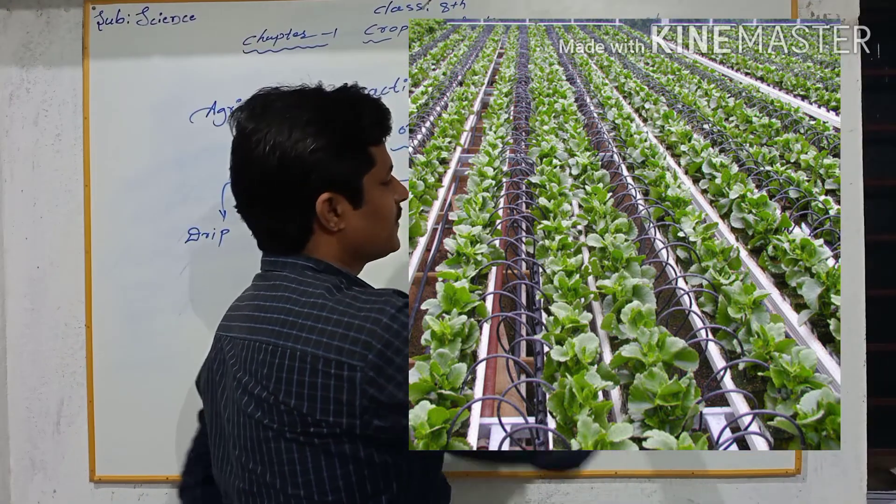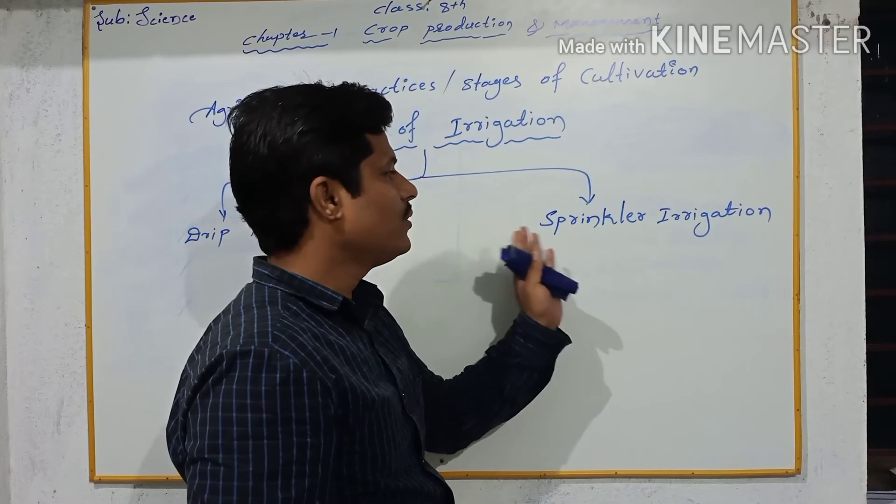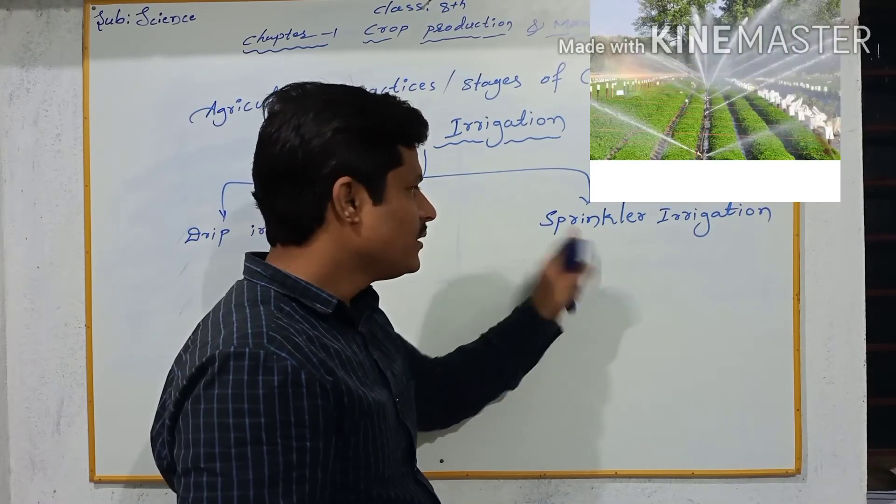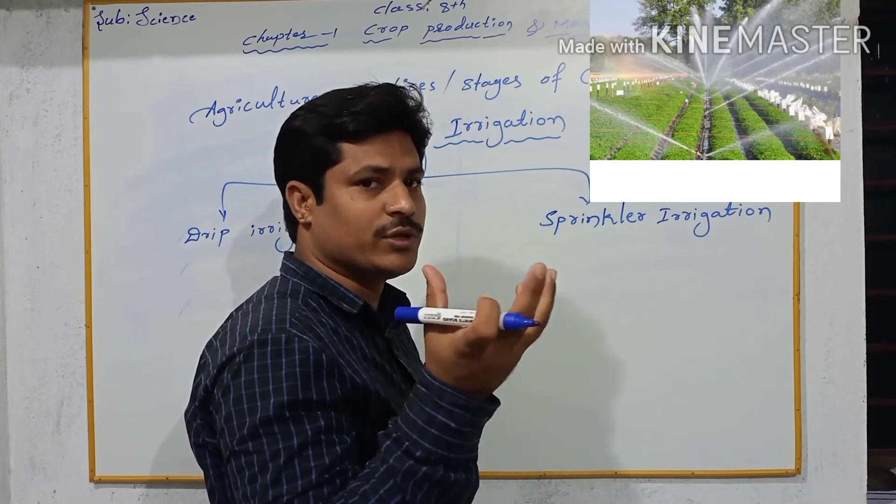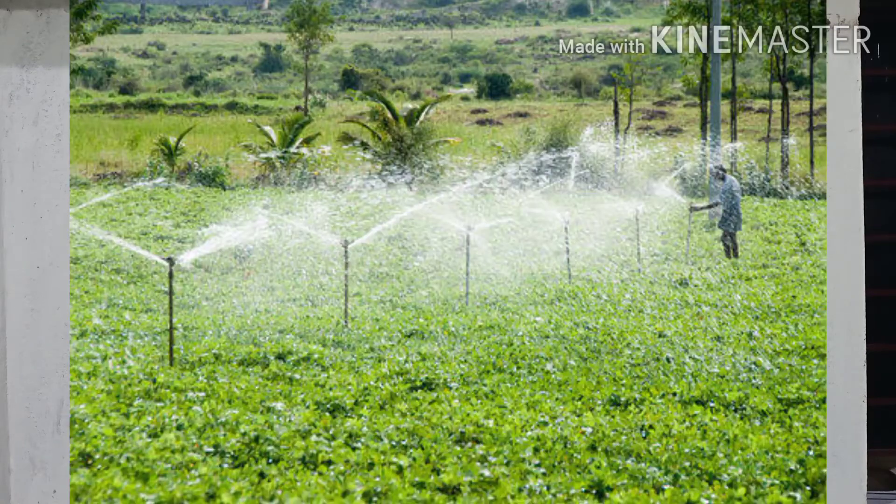Sprinkler irrigation. So this is the most useful method of irrigation. In this irrigation, the pipelines are attached to the rotating nozzles.